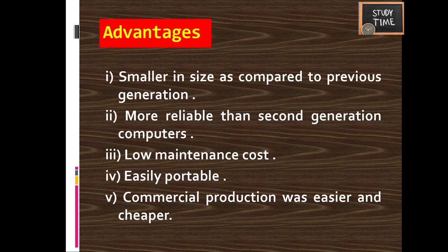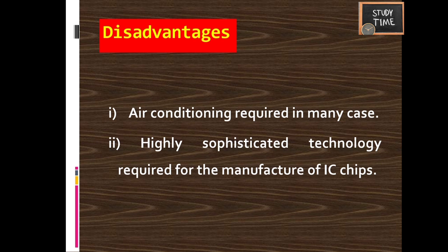Advantages of third generation computers: much smaller in size compared to previous generations, more reliable, low maintenance cost, easily portable, and commercial production was easier and cheaper. Disadvantages: air conditioning was still required, and highly sophisticated technology was needed for the manufacture of IC chips.